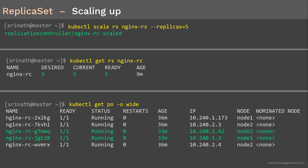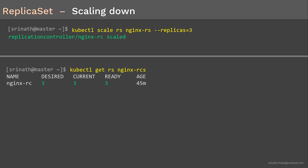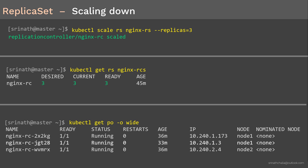Once the load returns to normal, we can scale down. Use the same kubectl scale command but set the replica count back to 3. To verify, run 'kubectl get rs' — here 'rs' is the short form of ReplicaSet — and you'll see desired and current both show 3. To see on which nodes the pods are currently running, use 'kubectl get pods -o wide': two pods on node 1 and one on node 2.